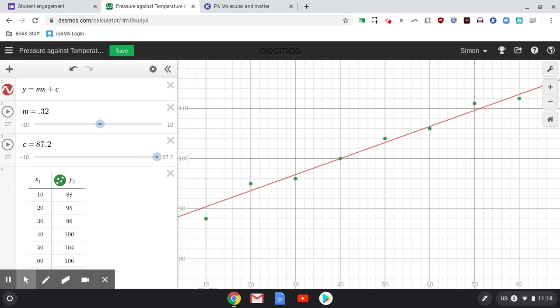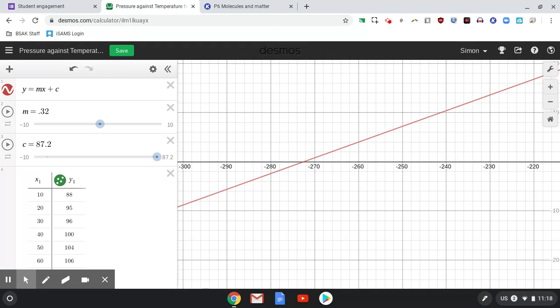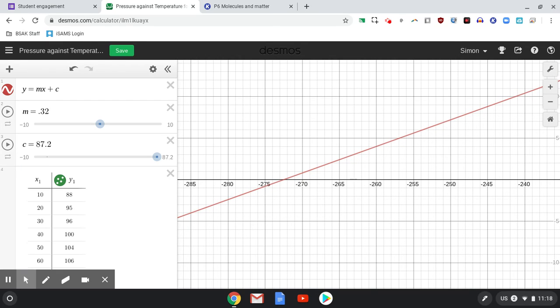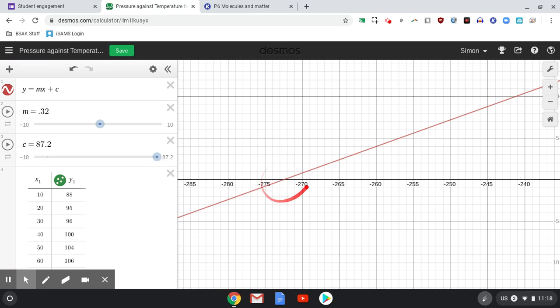A few of you need to maybe look at the way you put a straight line of best fit, because the intercept, this is the one we're after here, it should be exactly minus 273 degrees Celsius.